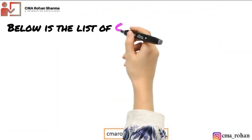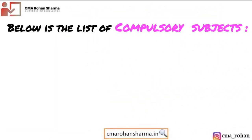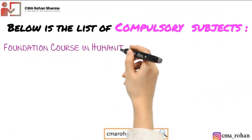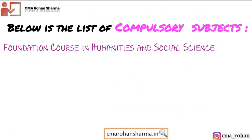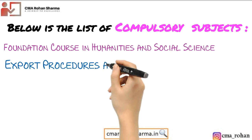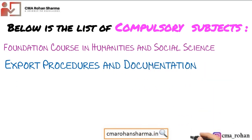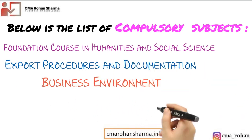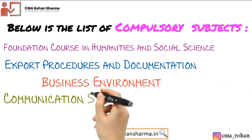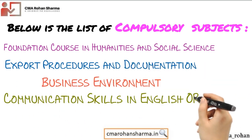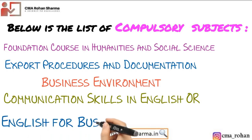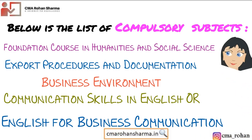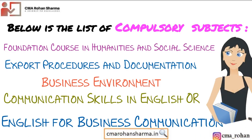Below is the list of compulsory subjects: foundation course in humanities and social sciences, export procedures and documentation, business environment. You can choose either communication skills in English or English for business communication.